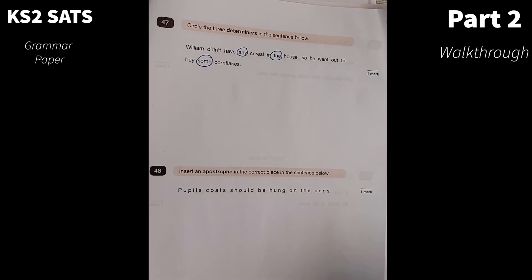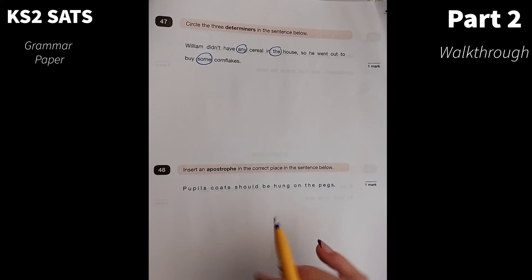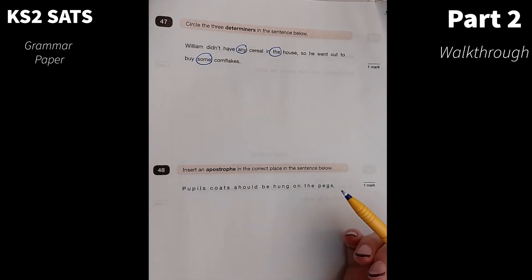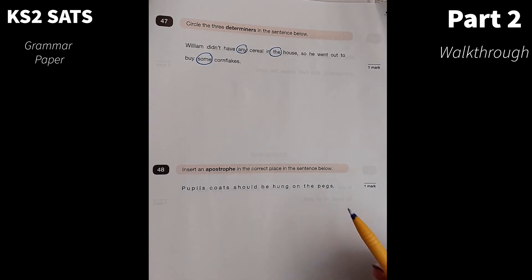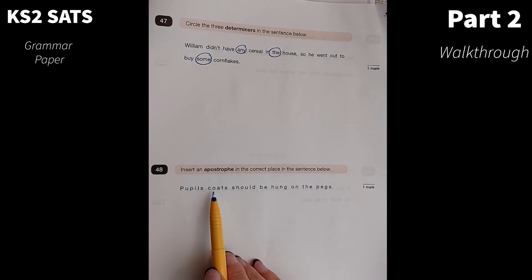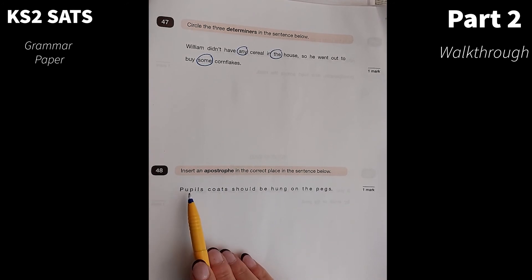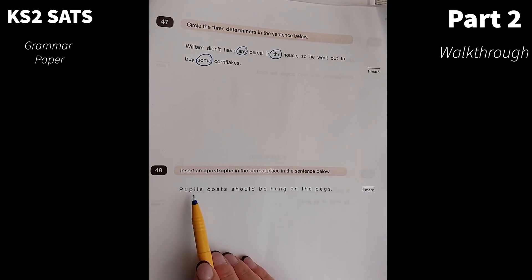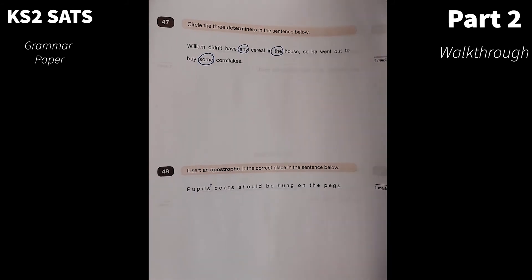Insert an apostrophe in the correct place in the sentence below. They've tried to trick the children by giving lots of words that could possibly have an apostrophe in, especially when they put that S in there, it will throw them. A pupil's coat should be hung on the pegs. An apostrophe wouldn't go on coats because the coats don't have anything belonging to it. The coats belong to the pupils. So it's pupils that's going to need to have an apostrophe. And because there's more than one, our apostrophe is going to go at the end of the S there because there's more than one pupil.